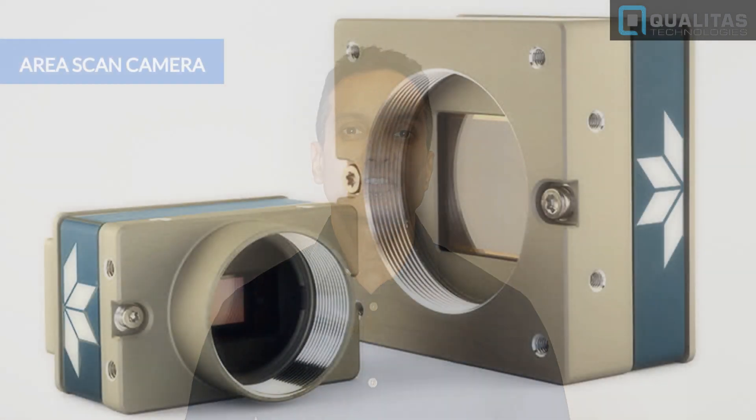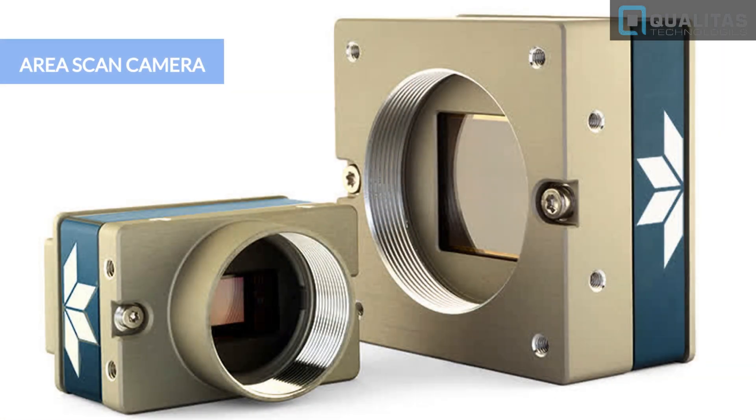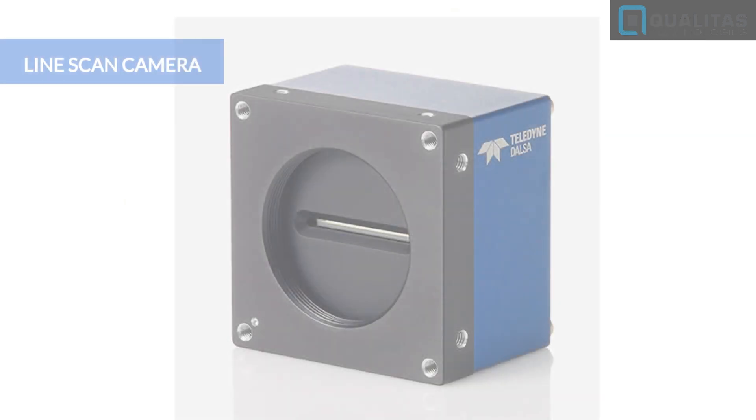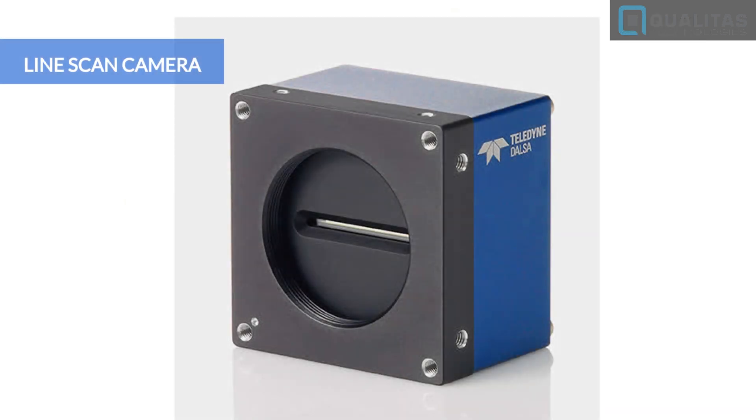There are two types of cameras to choose for your machine vision project: area scan cameras and line scan cameras. Area scan cameras, as the name suggests, capture an area of pixels in one frame. Line scan cameras capture a single line of pixels, and multiple lines are then stitched together to form an image. Line scan cameras are used for specialized applications, such as very high speed continuous inspections, inspecting the periphery of a cylindrical object, or capturing very high resolution over a large area.